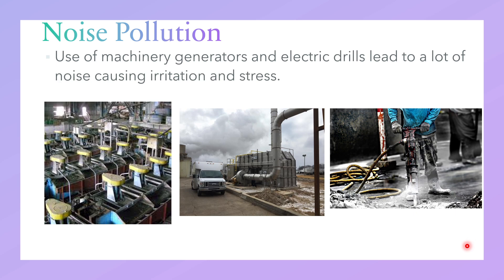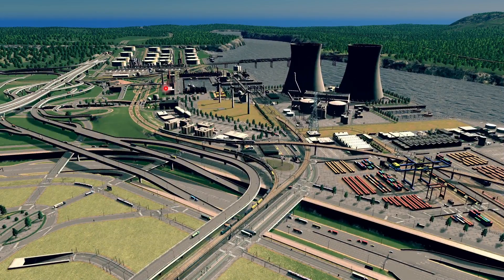Most industries use a lot of machinery, generators, and electric drills, which lead to a lot of noise, causing irritation and stress. Generators should be fitted with silencers, and machinery should be designed to lower noise and fitted with noise-absorbing materials. Care should be taken to ensure that industrial zones are separated from residential areas, so that industries remain away from residents and people and do not cause noise pollution.